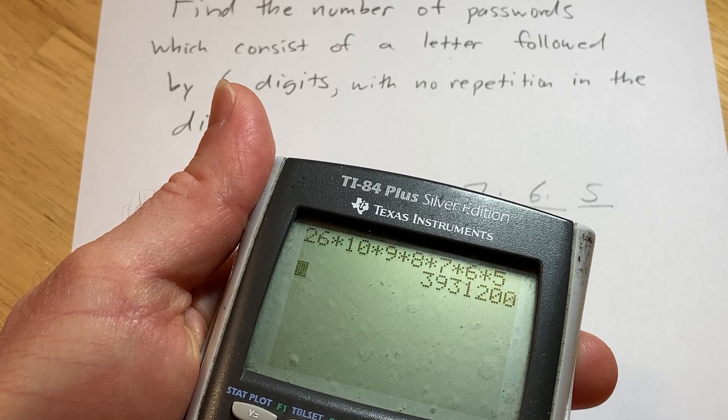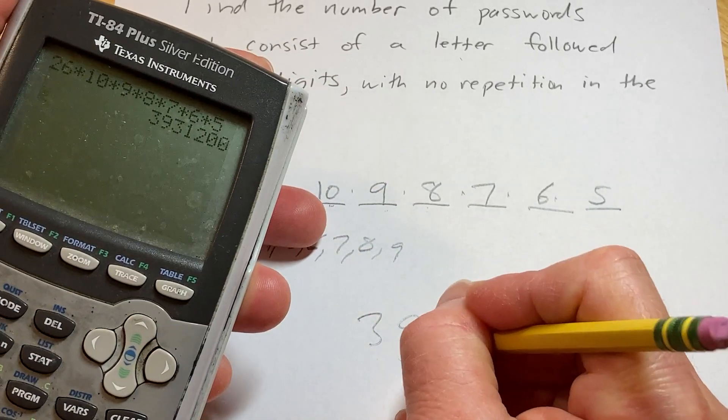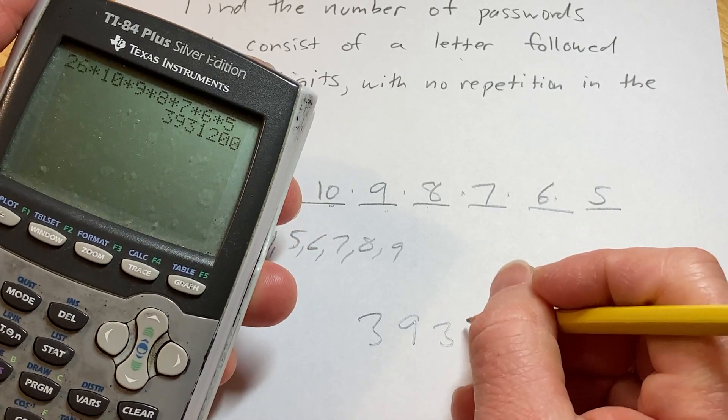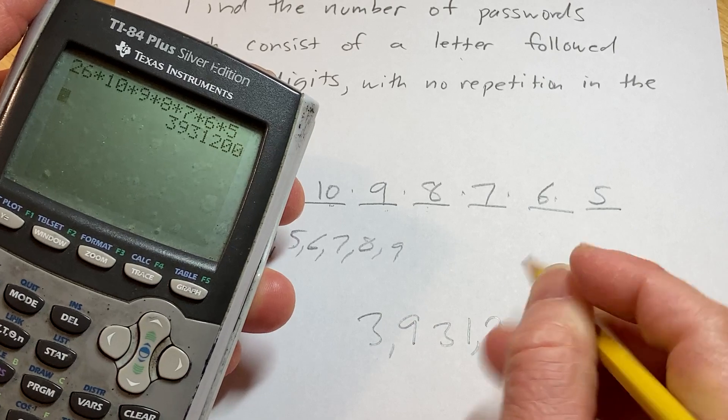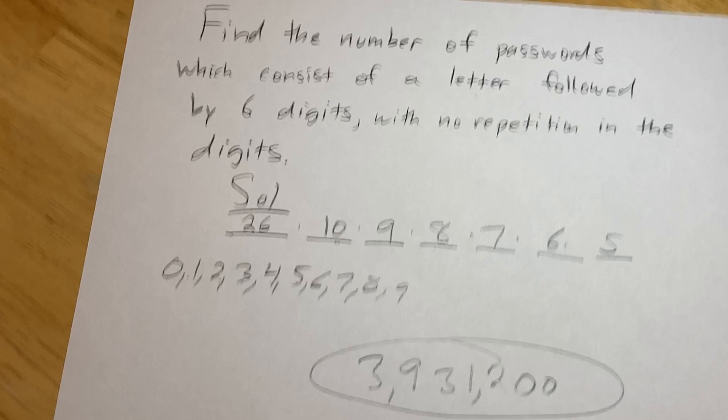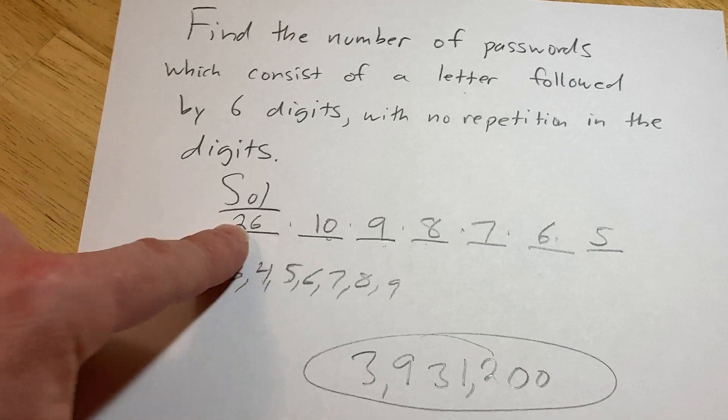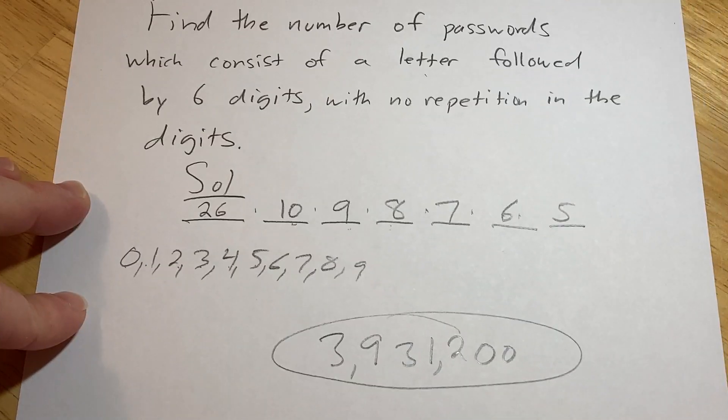So that's going to give us, if you can see it, that's a very big number, right? Wow. So 3,931,200. That is huge. So there are 3,931,200 possible passwords that start with the letter and have six digits with no repetition.